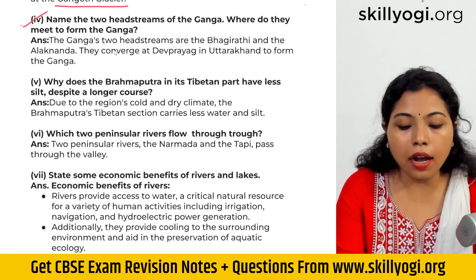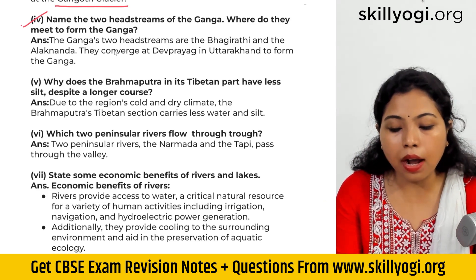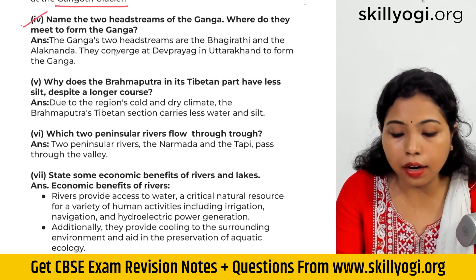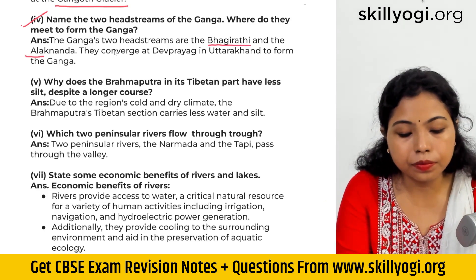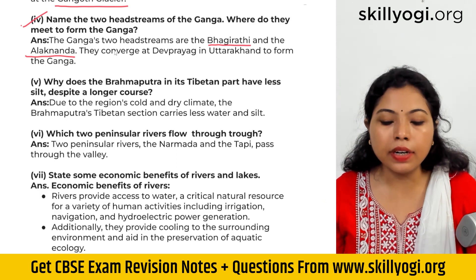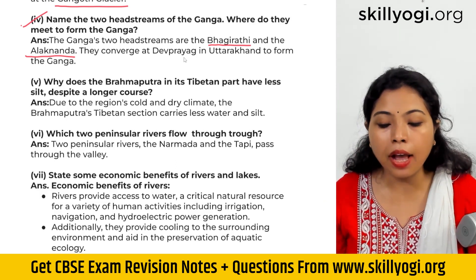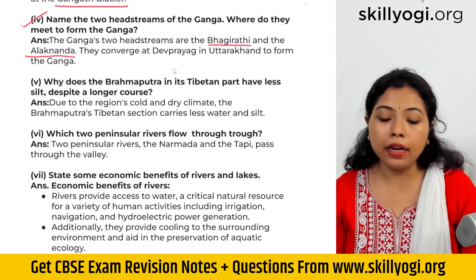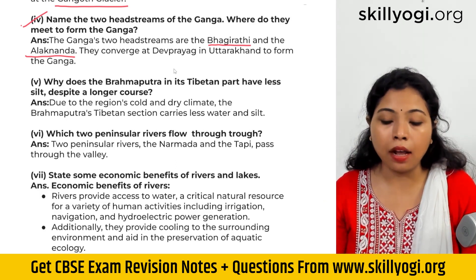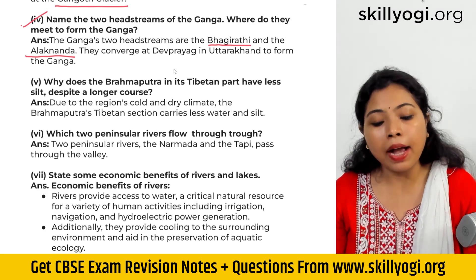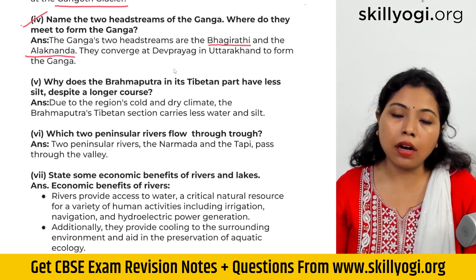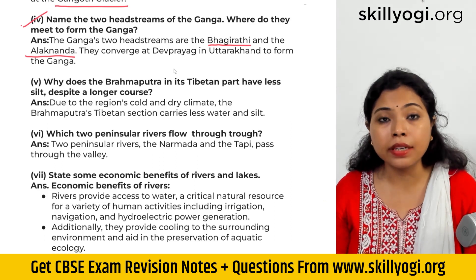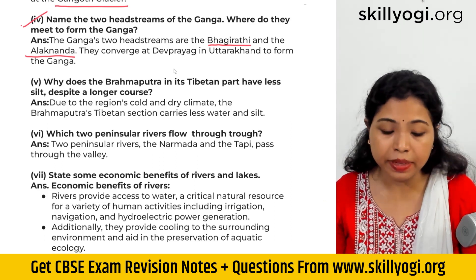The answer is: the Ganga's two headstreams are Bhagirathi and Alakananda. They converge at Devaprayag in Uttarakhand to form the Ganga. At Devaprayag, Bhagirathi and Alakananda join together and make the mainstream of the Ganga river basin.